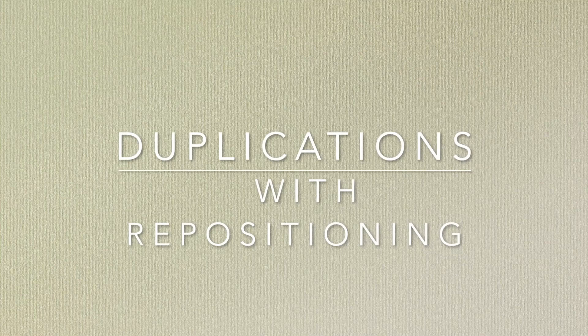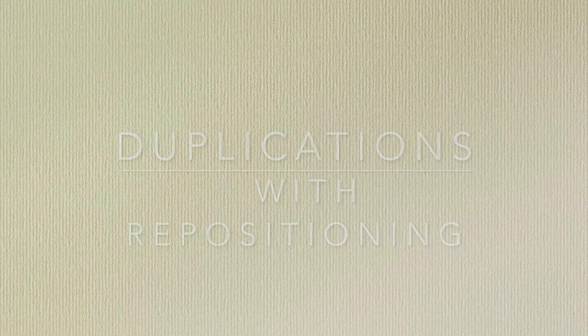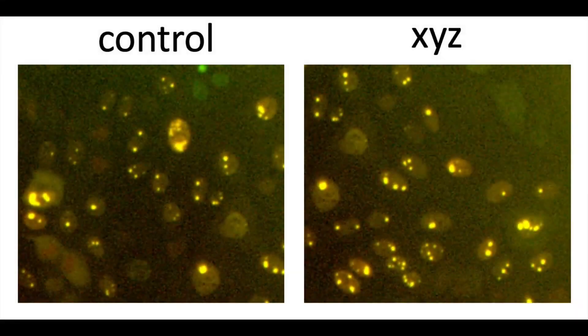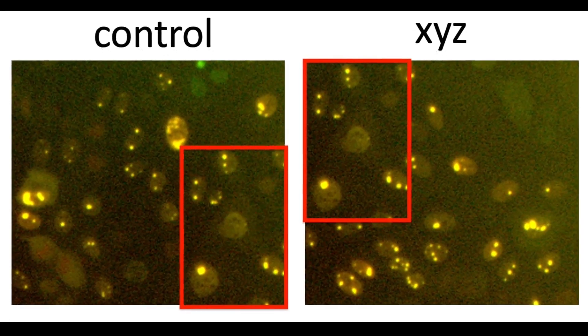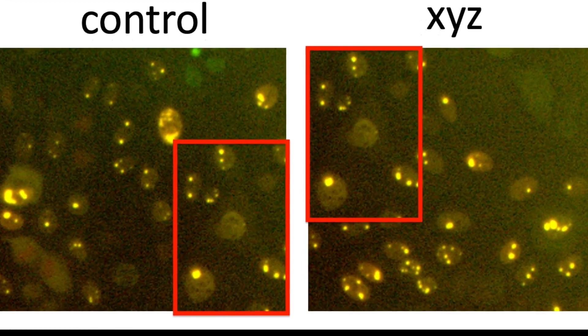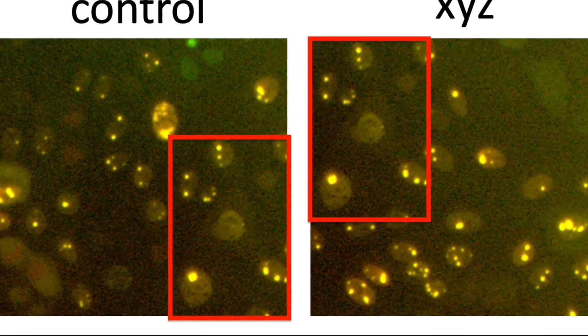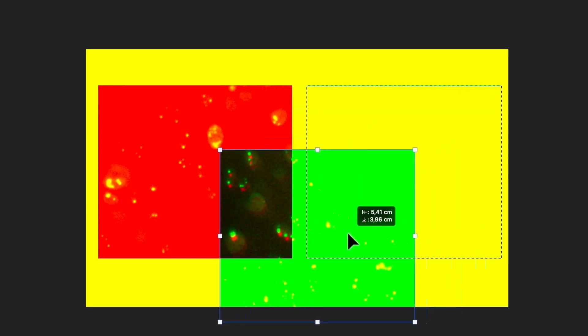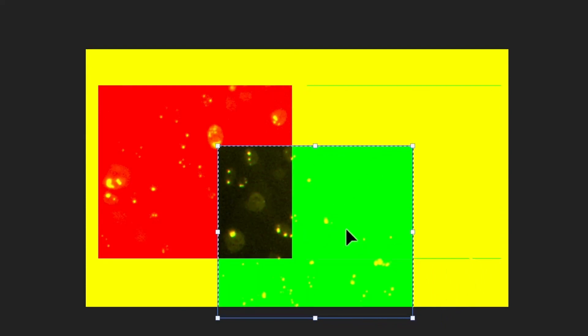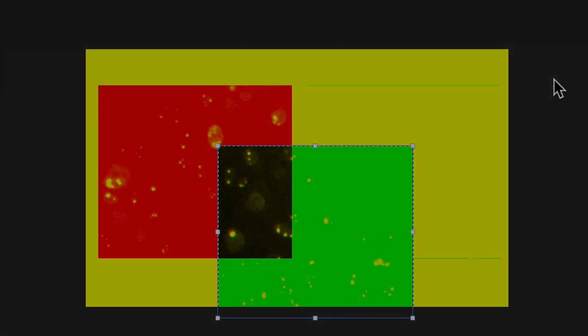Next up are duplications with repositioning, where two or more different sections of the same image are shown in separate panels, sometimes to represent different experiments or conditions. In one of the panels, the image is shifted within the frame and there is only a partial overlap. To verify a duplication, each of the two images can be pasted into separate color channels. When the two channels are overlaid, all the areas that are identical will show up as yellow and black or grey, and everything that still shows up as red or green is unique and doesn't match. This overlay process will be demonstrated again and explained in more detail in subsequent modules.